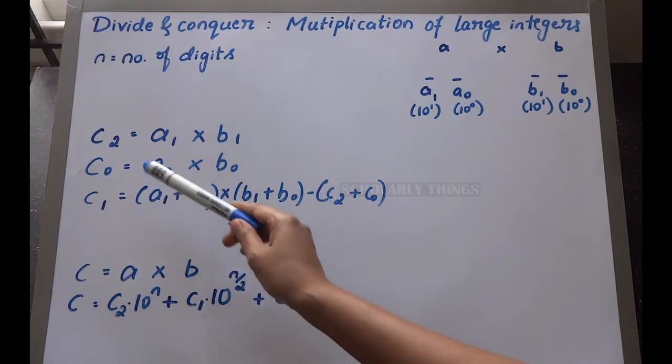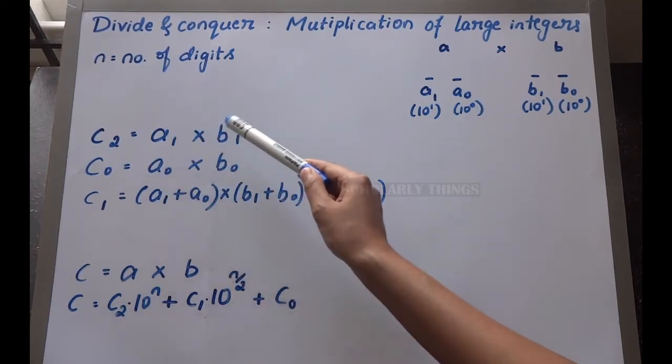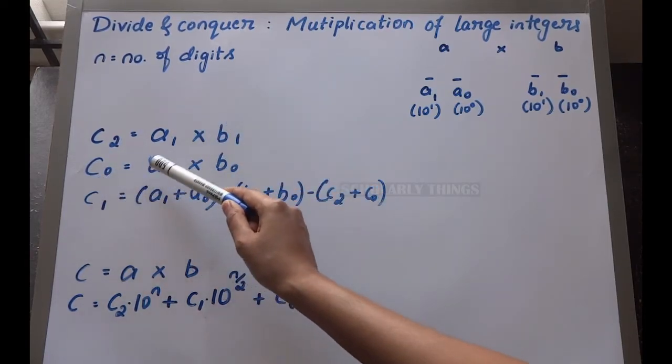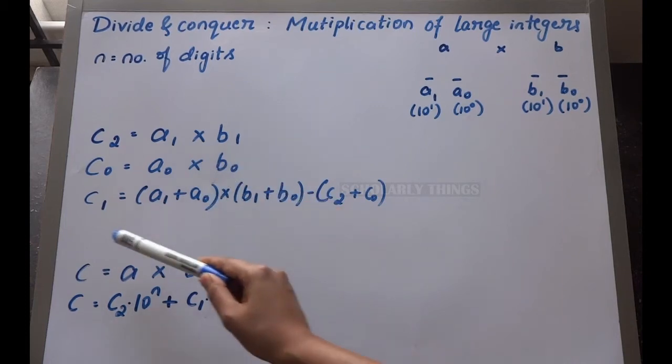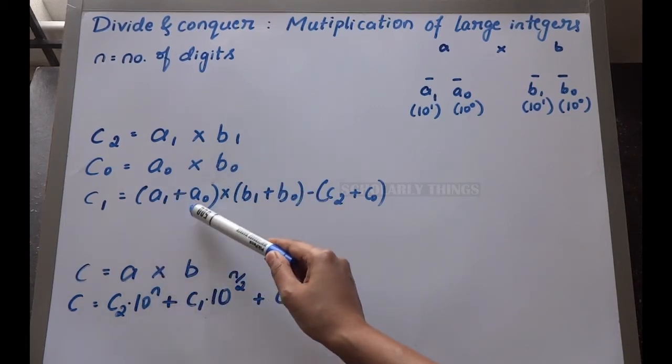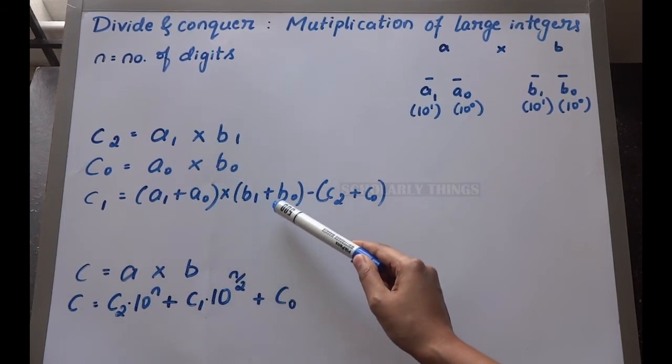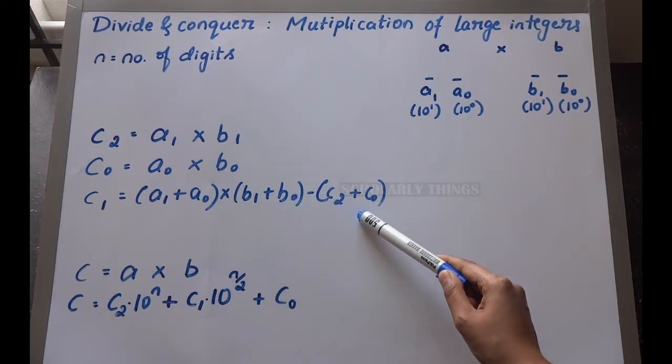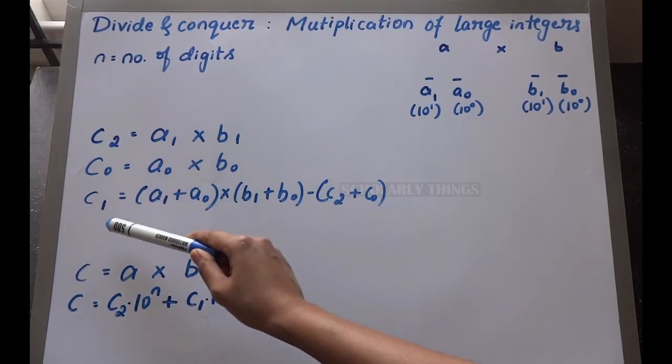c2 is equal to a1 × b1. c0 is equal to a0 × b0. c1 is equal to (a1 + a0) × (b1 + b0) - (c2 + c0). Once we find out the values of c2, c0, and c1, we can find out the final product.